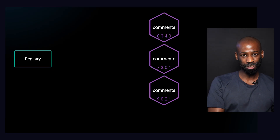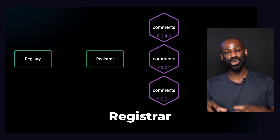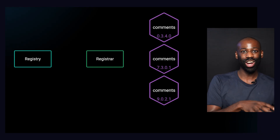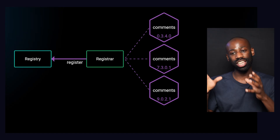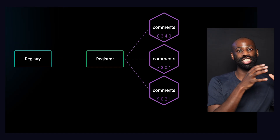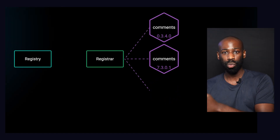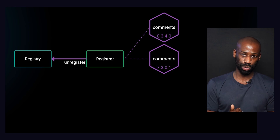In the alternative strategy, we use a registrar to do the registration. The registrar observes the service instances running and registers them with the service registry. When an instance shuts down, the registrar will unregister it. This strategy is called third-party registration. In this strategy, the service instance doesn't need to know about the service registry or how to register and unregister itself — the heavy lifting is done by the registrar.